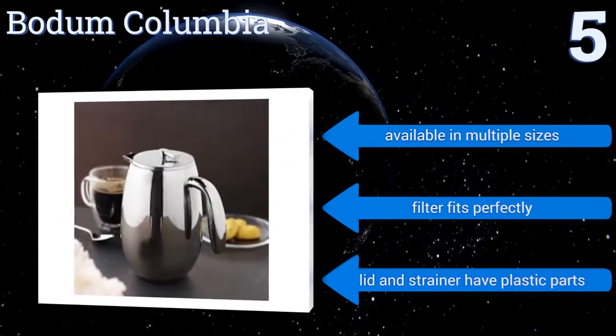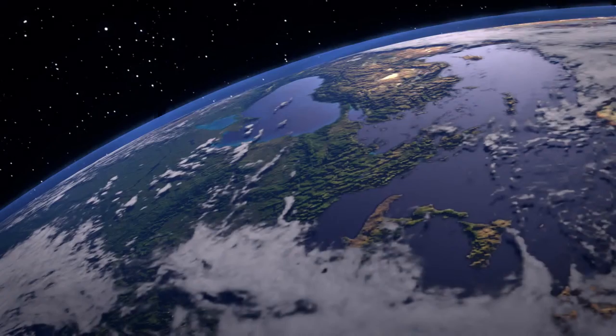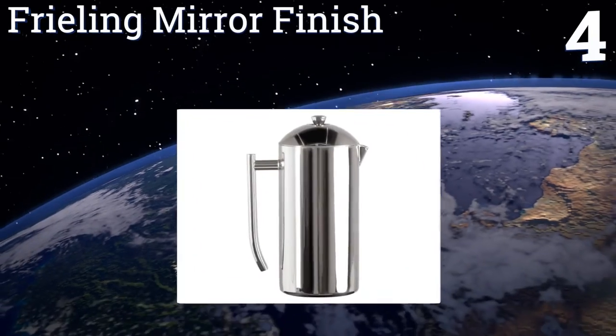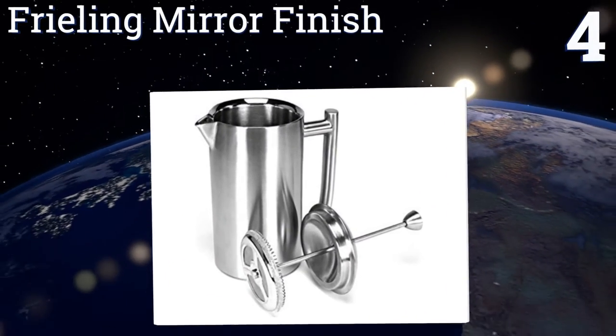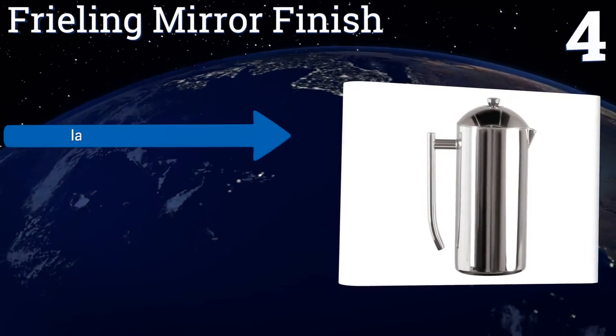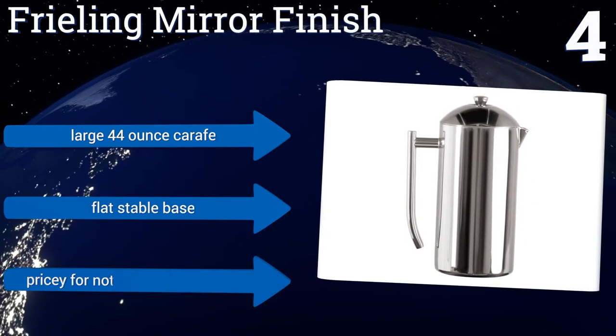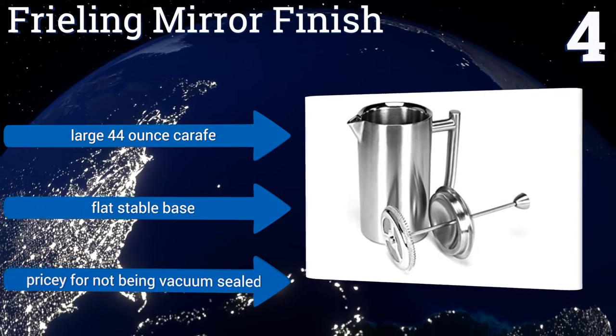At number four, the Frieling mirror finish features all steel components, which makes it dishwasher safe and also ensures there are no weak points to break. The plunger moves down smoothly as you press the coffee, and its double walls offer reasonable heat retention. It boasts a large 44-ounce carafe and a flat, stable base. However, it is a bit pricey for not being vacuum sealed.